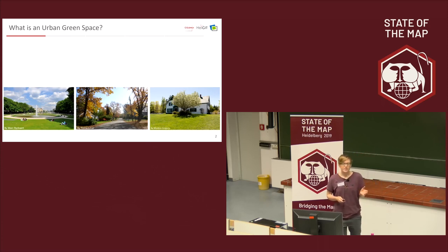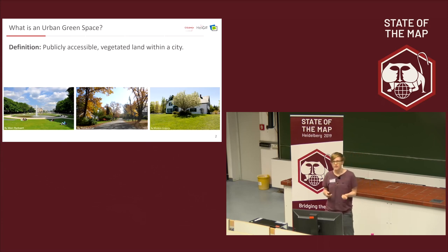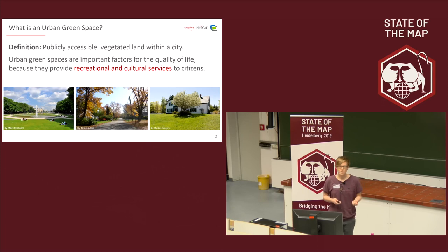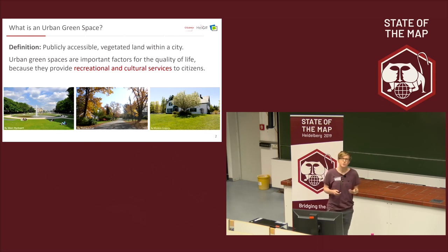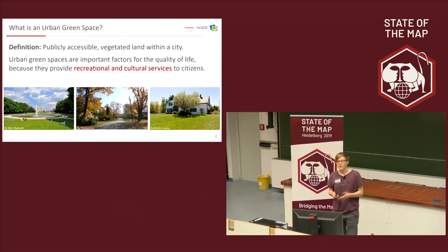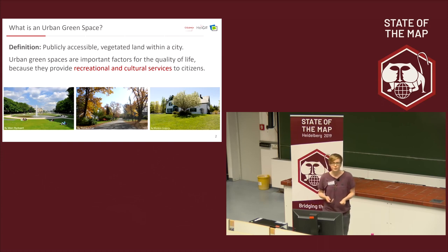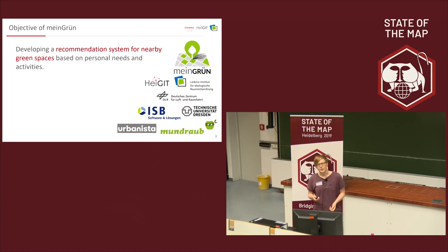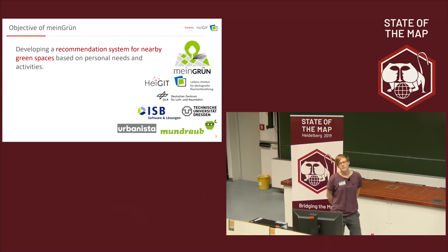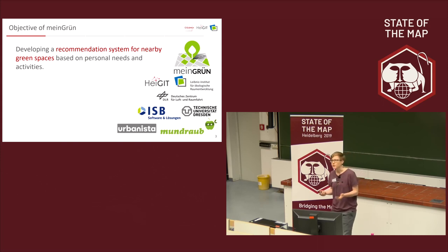In our study, we're actually focused only on public green spaces because they provide recreational and cultural services to people living in cities — like going to play sports or meet friends. They're an important factor for quality of life, so it's good to know where the next green space is. Our group is developing a recommendation system that suggests the most suitable green space nearby to satisfy your needs and activities.